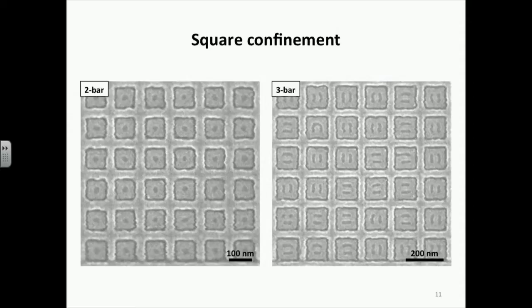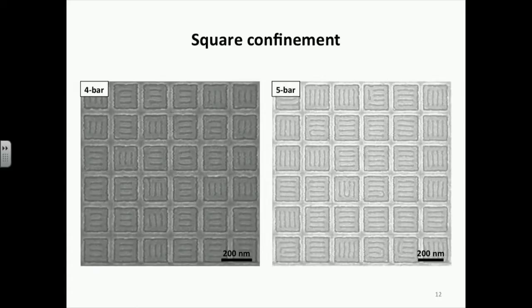Starting with a confinement size of 100 nanometers, we observed a two-bar structure, which is simply a square ring. As we increased the confinement size, a center sphere formed in the middle, eventually connected to the outer ring, forming an additional bar — resulting in three-bar structures. As we increased the confinement size further, we observed four-bar structures shown in the left SEM image and five-bar structures shown in the right SEM image.